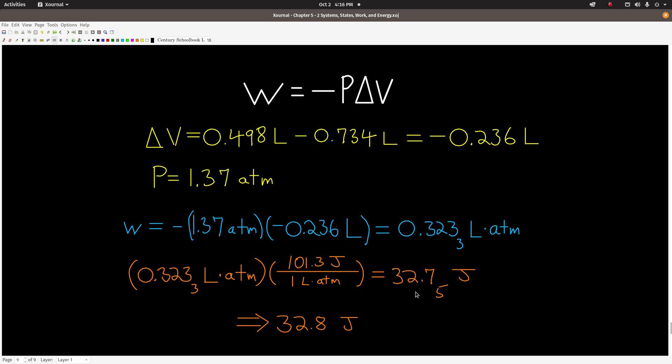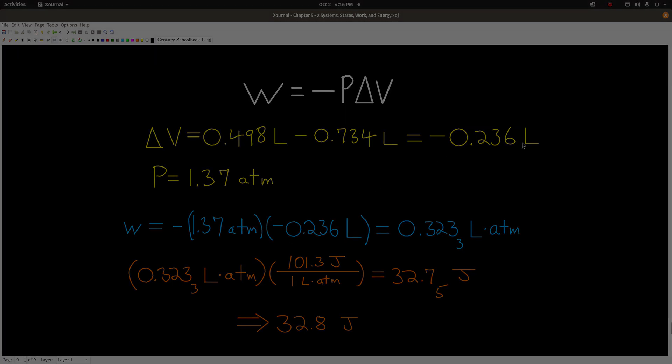And now here all we're doing is converting that to joules using that conversion factor I gave you a minute ago, and I end up with about 32.8 joules. Real quick word about the sign and what it means: because the work is positive, that means work is being done on the system. The system gains that much energy, that much internal energy by having the work done on it. And that's because it was compressed. And that's all there is to it, guys.